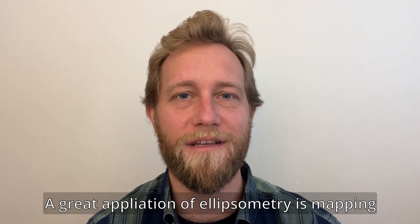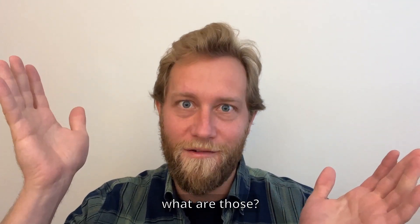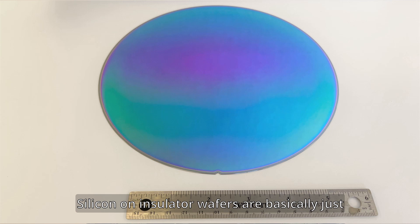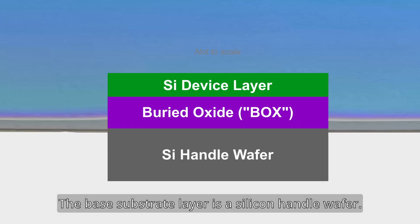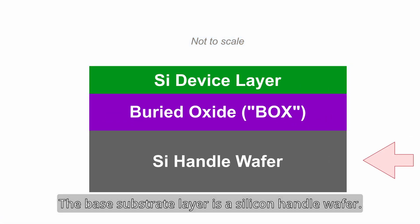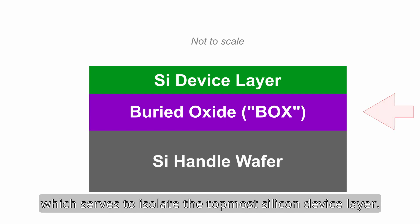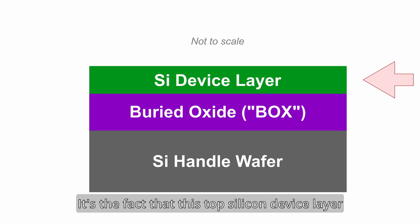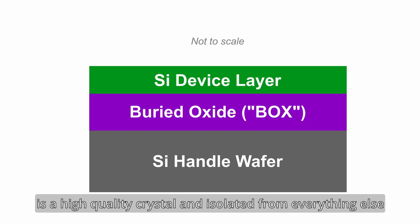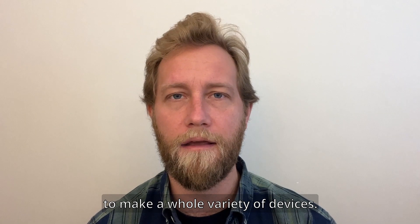A great application of ellipsometry is mapping uniformity of silicon on insulator wafers. So really quick, what are those? Silicon on insulator wafers are basically just a special type of silicon wafer, typically made up of three layers. The base substrate layer is a silicon handle wafer. Above that is a buried oxide layer which serves to isolate the topmost silicon device layer. It's the fact that this top silicon device layer is a high quality crystal and isolated from everything else that enables these wafers to be used to make a whole variety of devices.